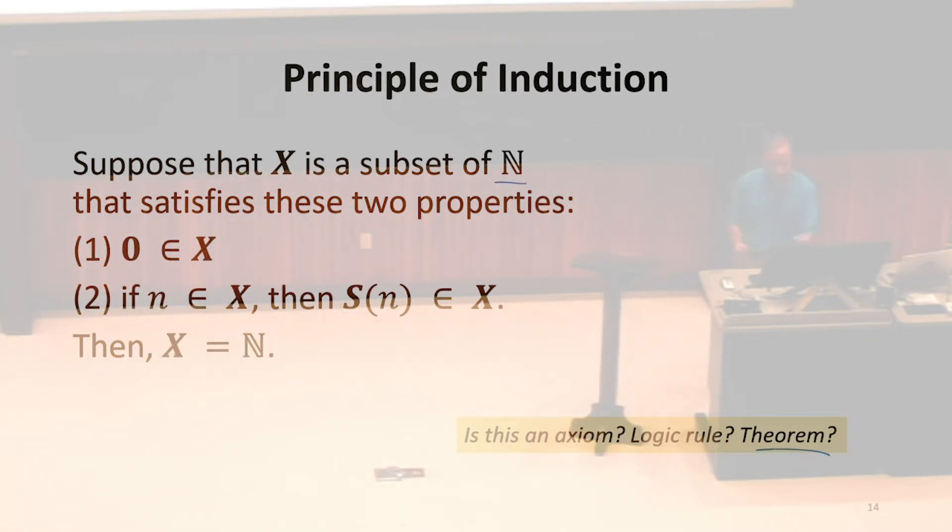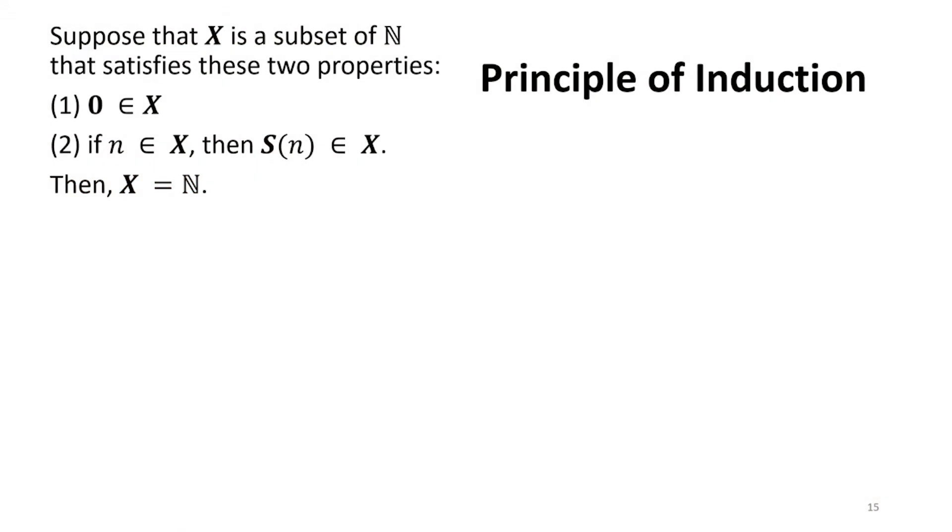And it can be, but what makes it a theorem is this is something we can prove. This isn't something that we have to accept. This is something that we can actually prove. And once we've proven it, we can use it as logic as a way of constructing proofs.